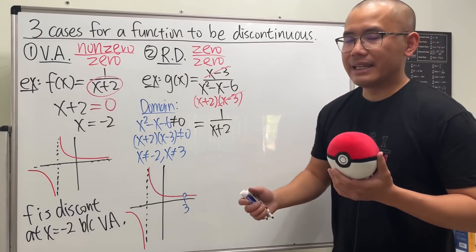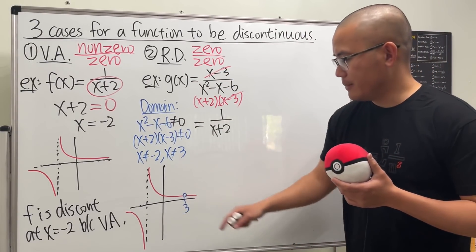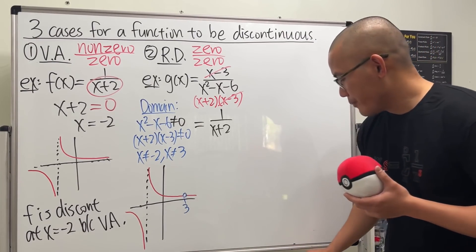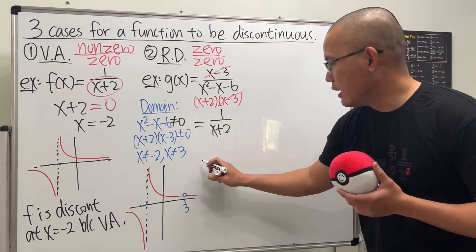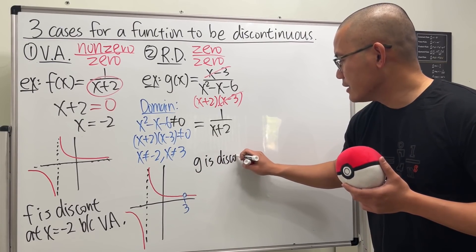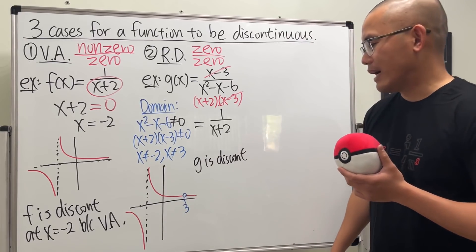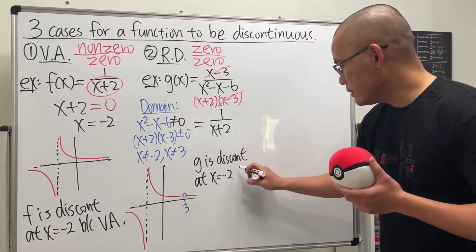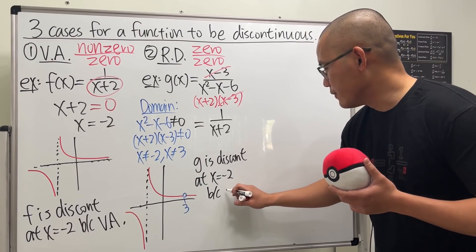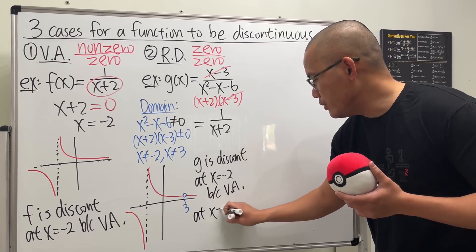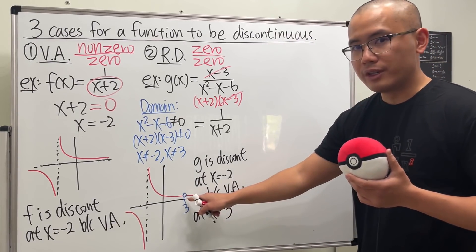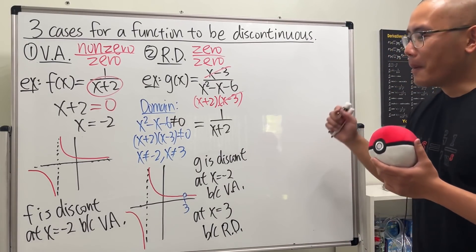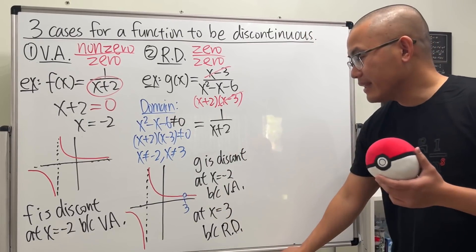Removable means it's fixable easily — the picture just has an open circle on the graph, and filling the circle fixes it. So the conclusion for function g: g is discontinuous at x equal to negative two because of the vertical asymptote, just like the first case, and also at x equal to three because of the removable discontinuity, abbreviated RD.